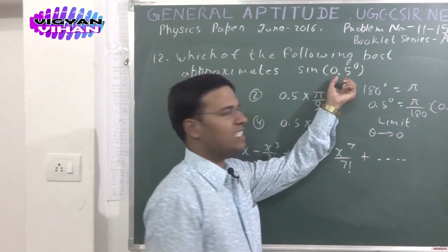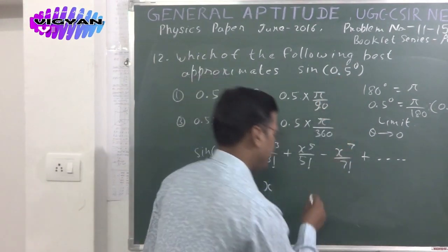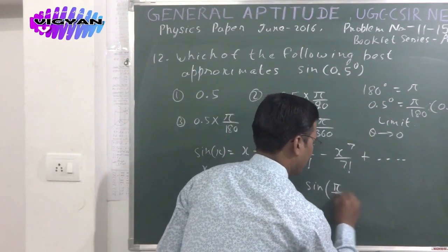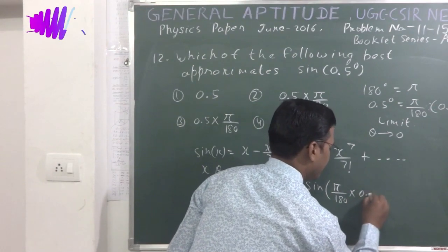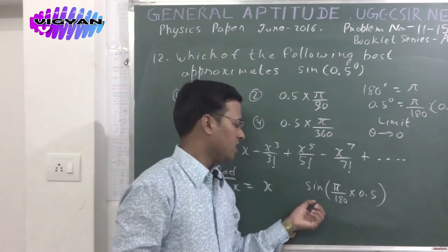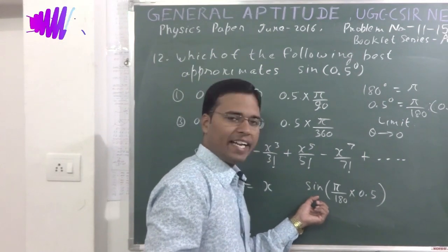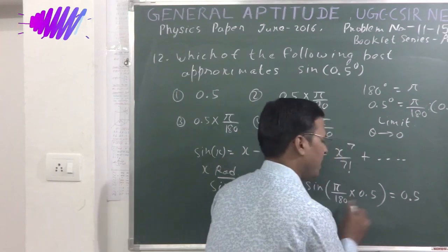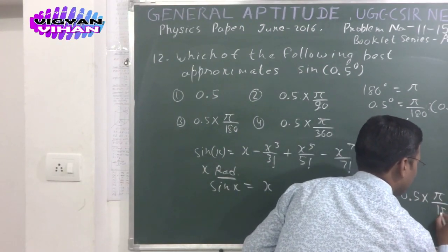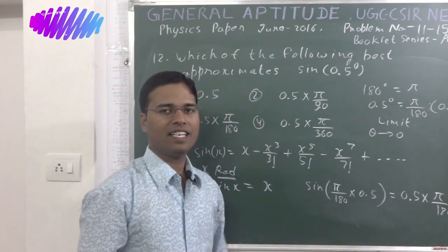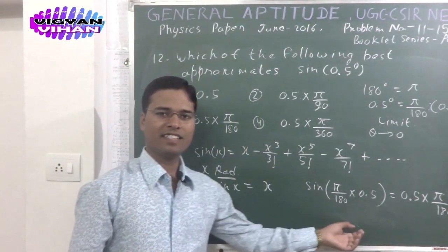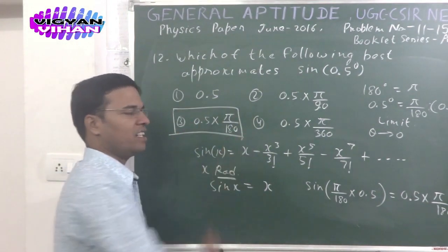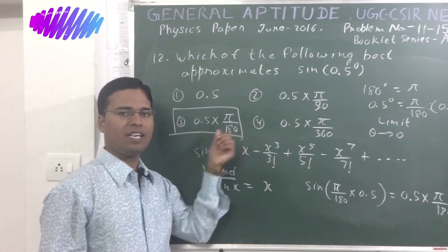So when we convert 0.5 degrees, we write sin(π/180 × 0.5), and the value of the sine can be written simply as 0.5 × π/180. The correct answer of this problem is option 3: 0.5 × π/180.